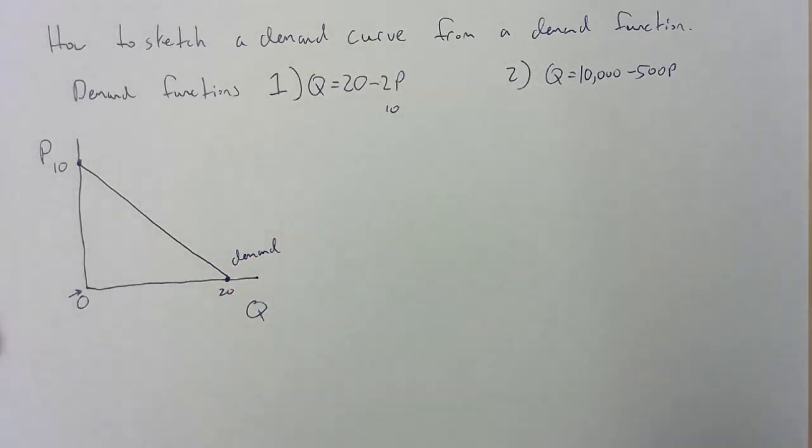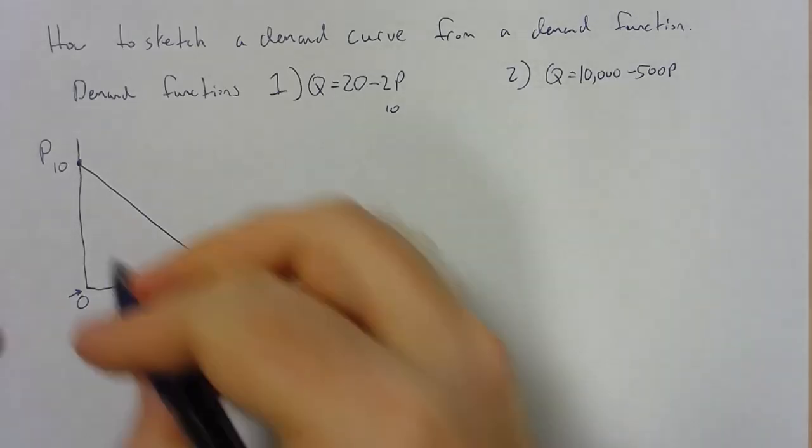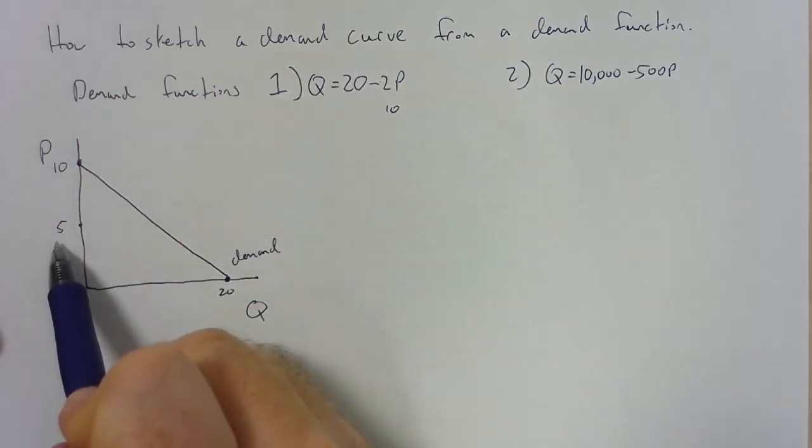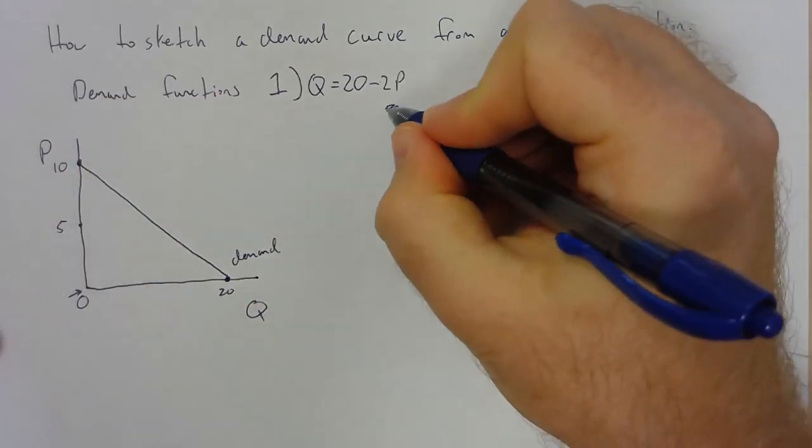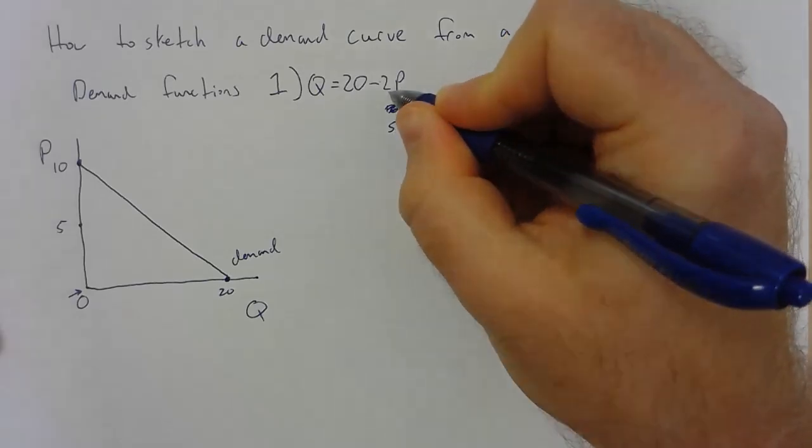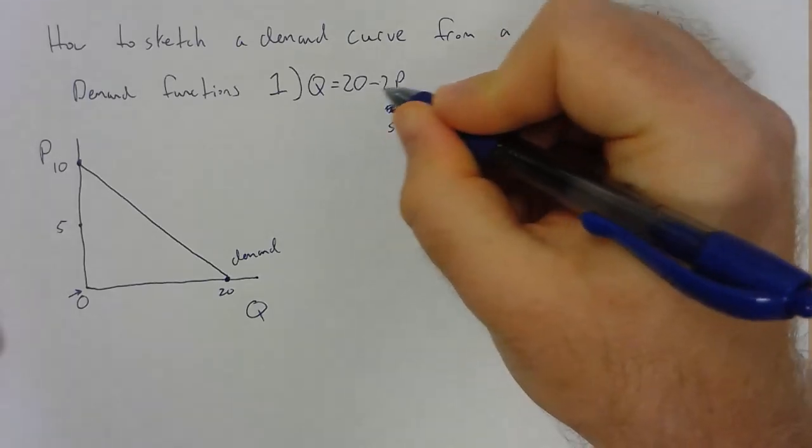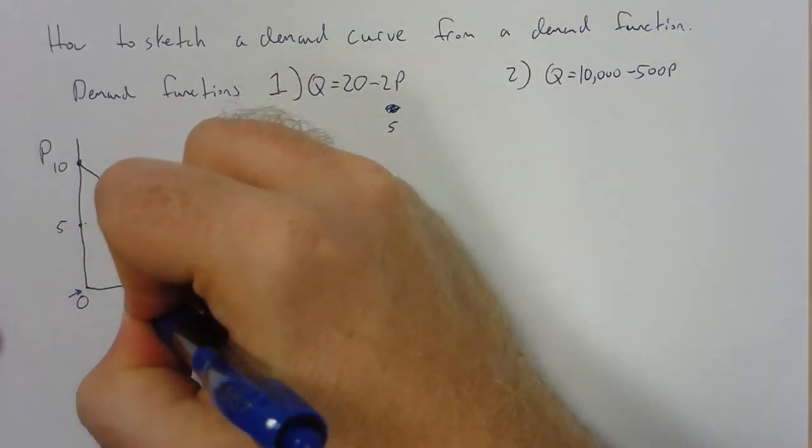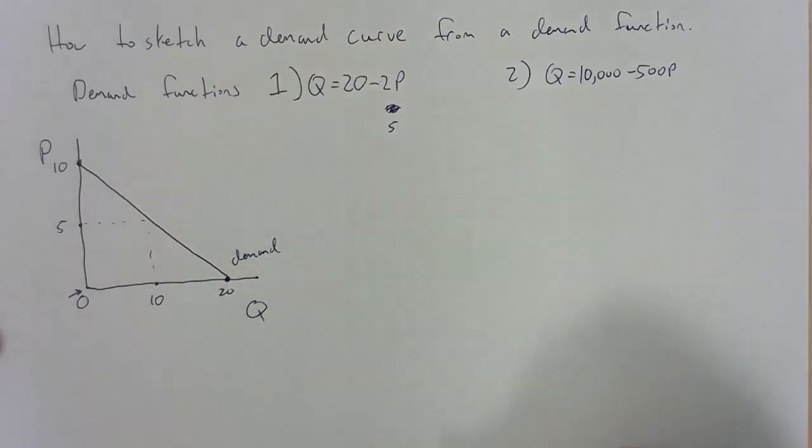Now for example, maybe you have to solve for some points in between the two intercepts. So what we could do is look at maybe the middle point. At a price of five, what would q end up being? We could imagine that price is five. Five times two gives us 10, 20 minus 10 gives us 10. So we would expect a q value of 10, and we could repeat this process for any value.